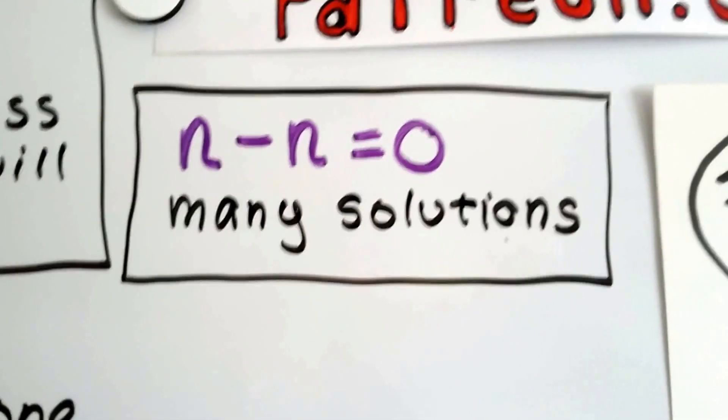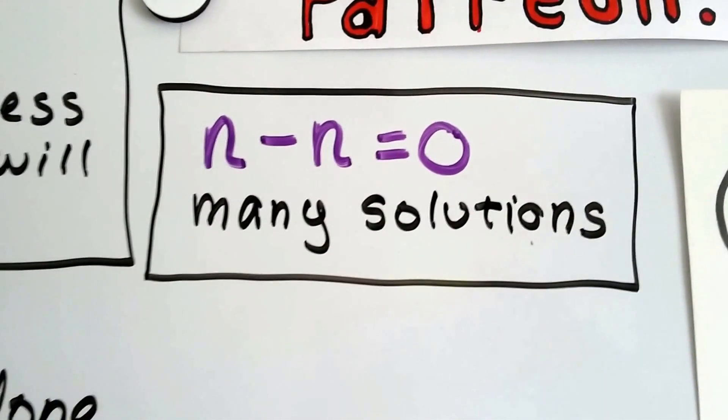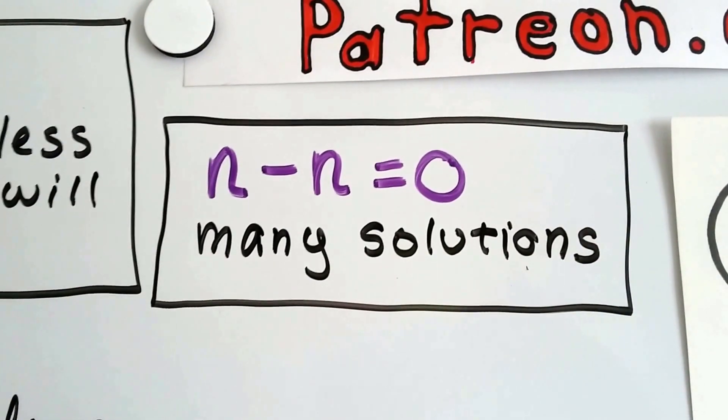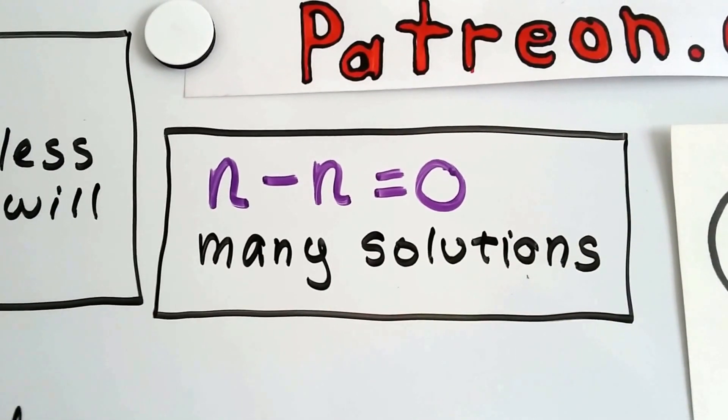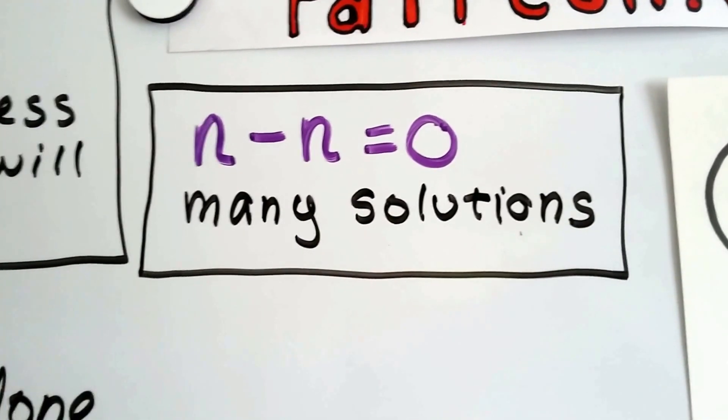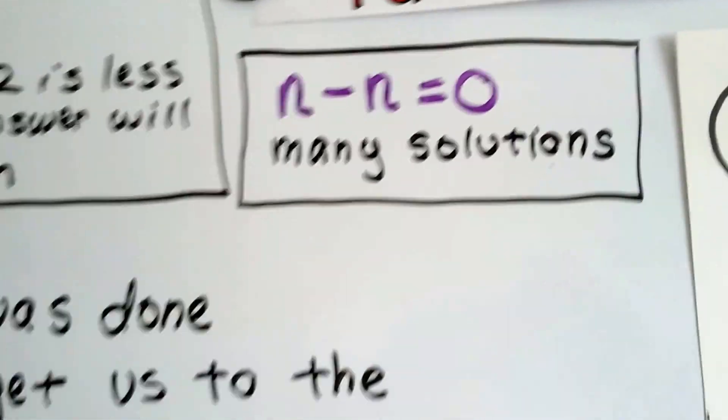I want you to look at this one too. If we have n minus n or a minus a or x minus x and it equals 0, that could be anything. It could be 10 minus 10, it could be 4 minus 4, it could be 1 third minus 1 third. There's lots of solutions for that one. It could be every whole number. It could be so many possibilities.